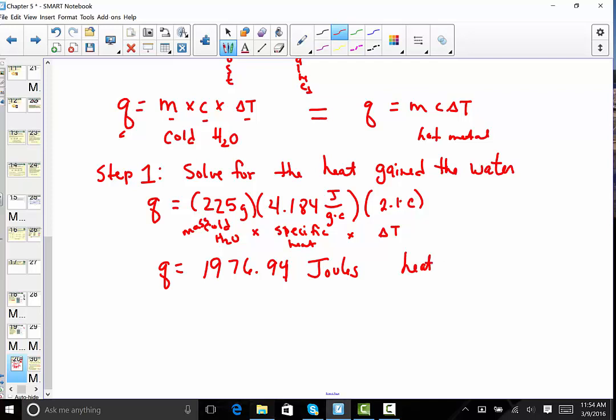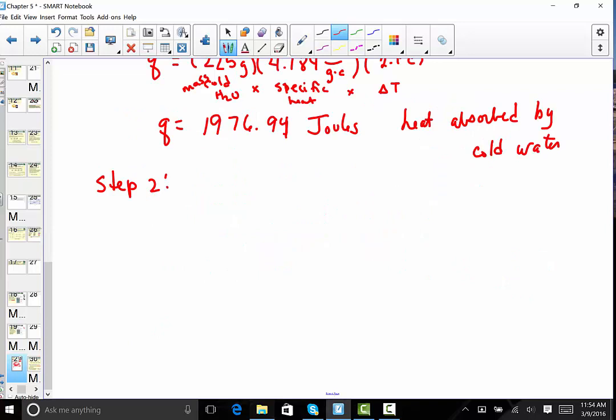And that unit would be joules of energy. Remember what this represents. This is the heat absorbed by the cold water. We know now that that same quantity of heat absorbed is equal to the heat lost by the metal, by the hot metal. We use that Q, the heat that we just calculated, to solve for the specific heat of the metal.